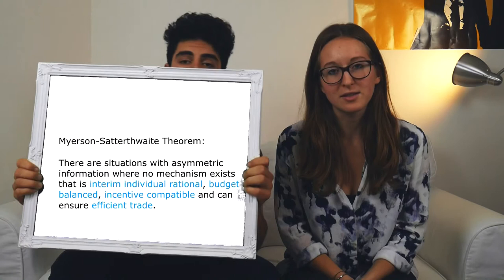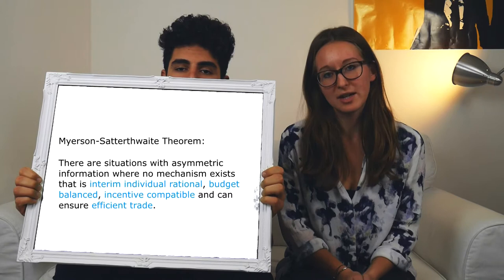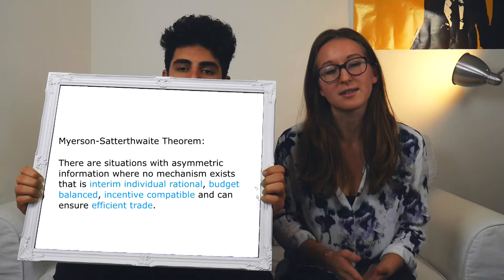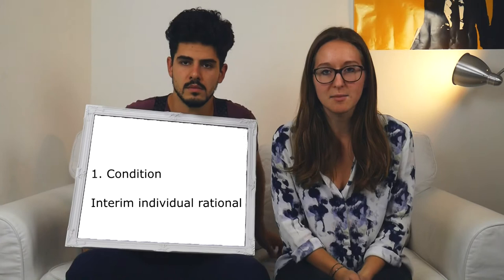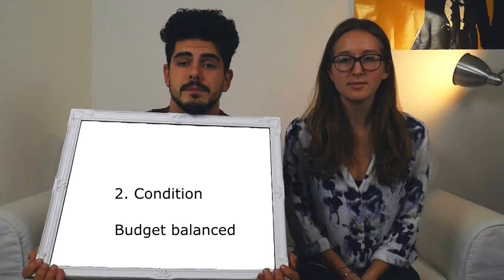So the Myerson-Satterthwaite theorem says that there are situations where no mechanism exists that is interim-individual rational, budget balanced, incentive compatible, and can ensure efficient trade. Let's take a closer look at the different conditions. Interim-individual rational means that the individuals want to participate in the game, knowing how the mechanism works and what their valuations are — meaning their expected value from the trade is not negative.